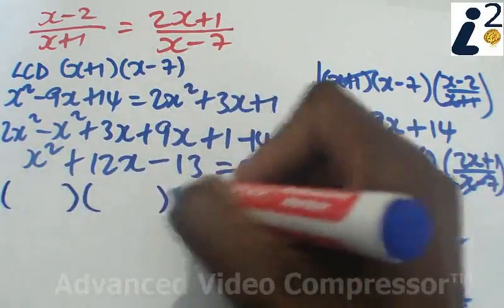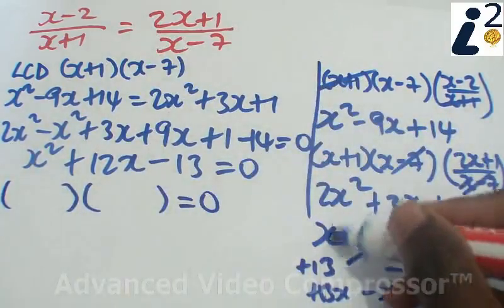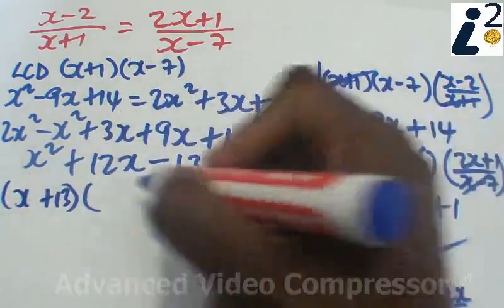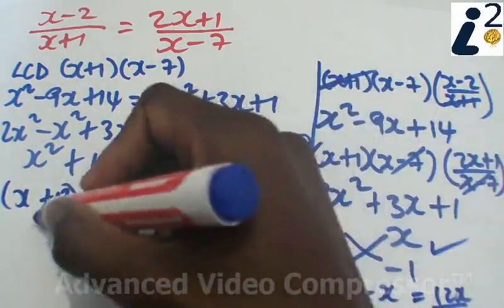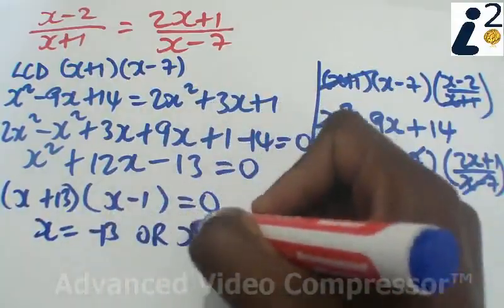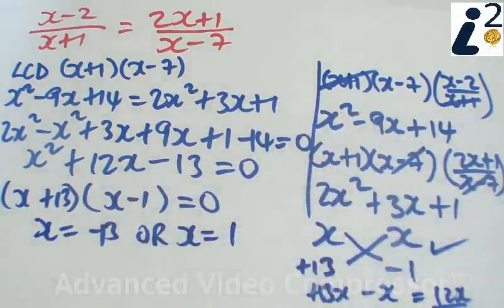So we open brackets and we write these numbers here which is x plus 13 and x minus 1. So the solution is x equals negative 13 or x equals a positive 1 and we're done.